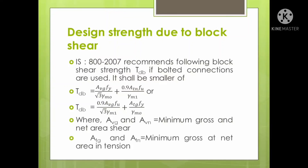ATG is the minimum gross area in tension, and AVN is the minimum net area in shear. How to find these areas will be demonstrated in subsequent numerical examples.